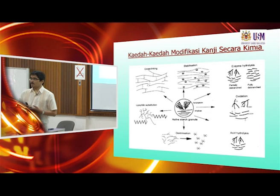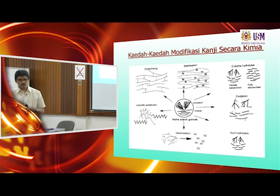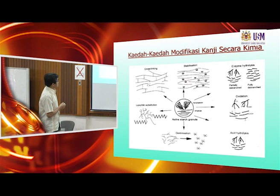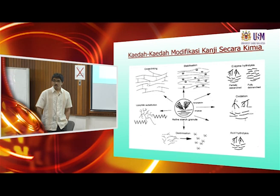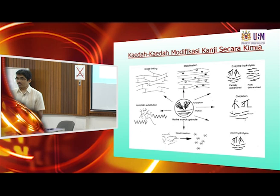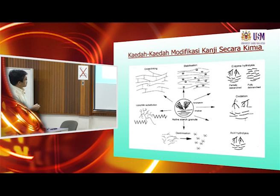In the industry, although less and less chemically modified starch is being used, some are still in use because there is no replacement yet. Starting with the native starch granule, one of the most popular modifications is cross-linking. Cross-linking basically adds new covalent bonds — not hydrogen bonds — to the polymer chains, whether amylose or amylopectin, using a cross-linking chemical agent.